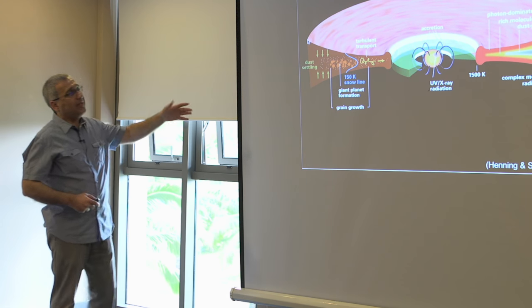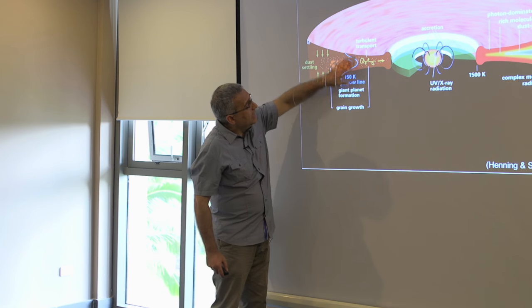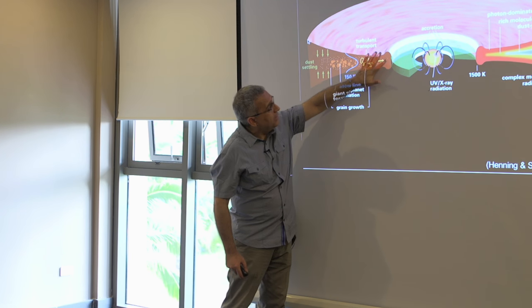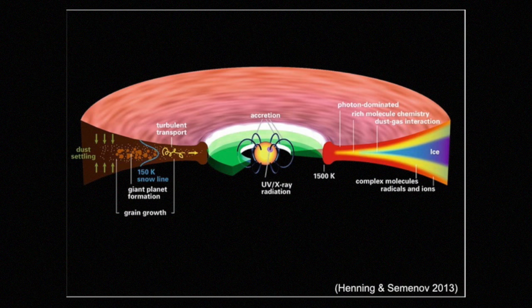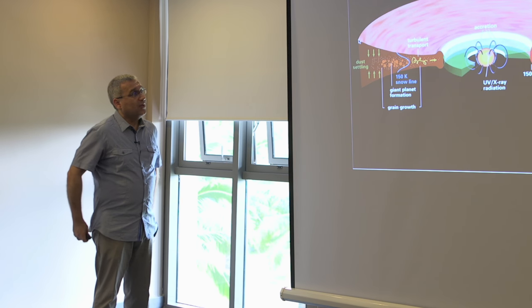This is the same thing shown edge-on. It tells you which part of the disk is highly interacting with the star, shows where planet formation is more effective, and where giant planets form. The dust settling also shows the temperature variation. These are all cartoons to give you an idea of where I'm going — they are not quantitative.